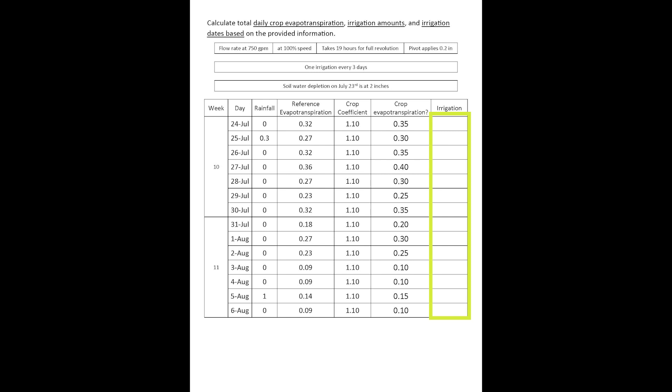At some moment during this 14-day period you want to apply water, and the amount of water you're going to apply every time is going to be 7500. The reason why 7500 is just because of the pivot characteristics — you can only apply that 7500 every three days.